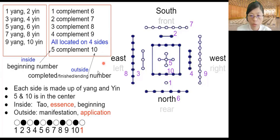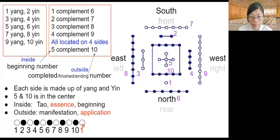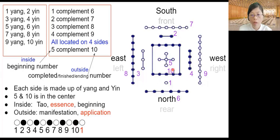The outside number can also be called the completion or ending number. It starts from one and ends at six; it starts from four and completes at nine; it starts from two and ends at seven. The numbers alternate: white dot, black dot, white dot, black dot all the way to ten. After ten, the cycle returns to one — ten is just next to one, and another cycle begins.